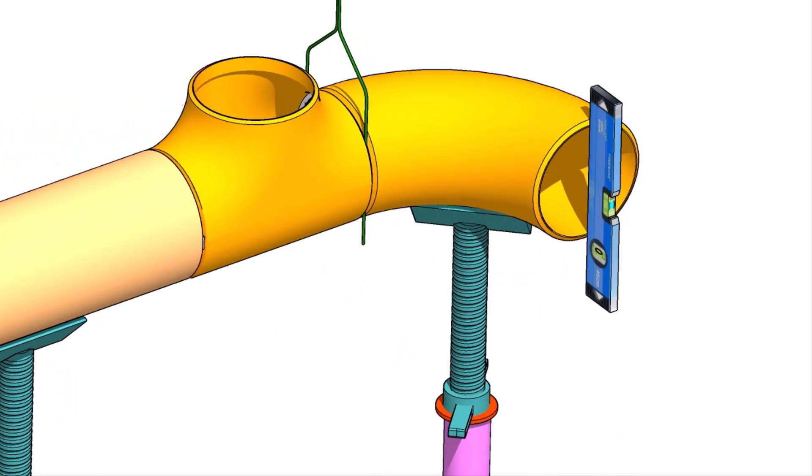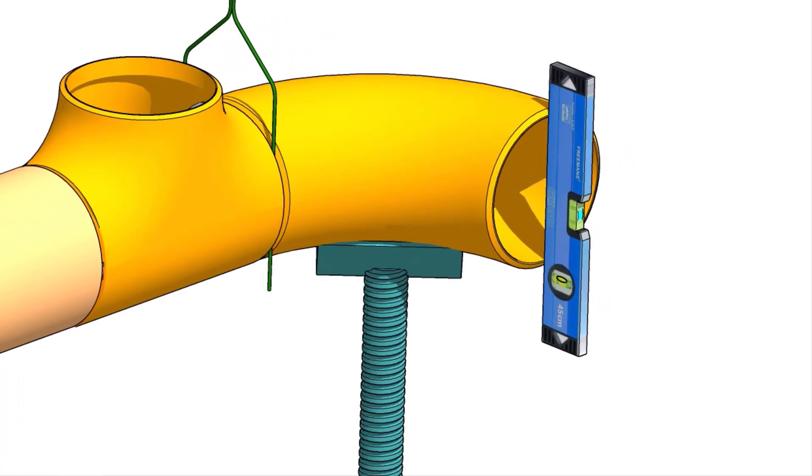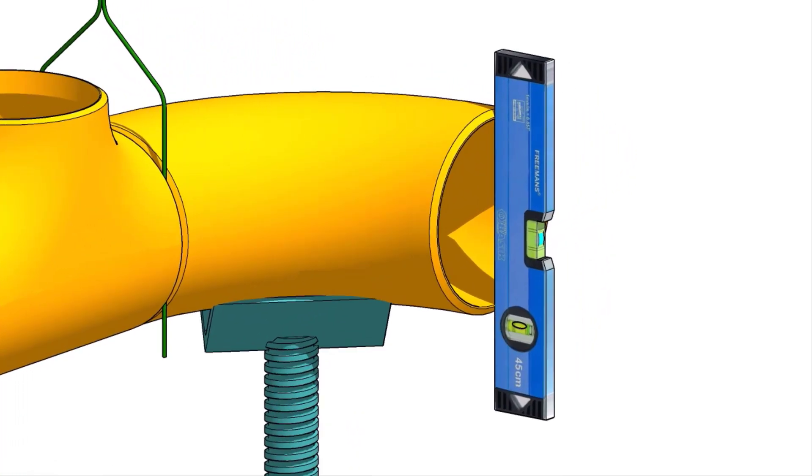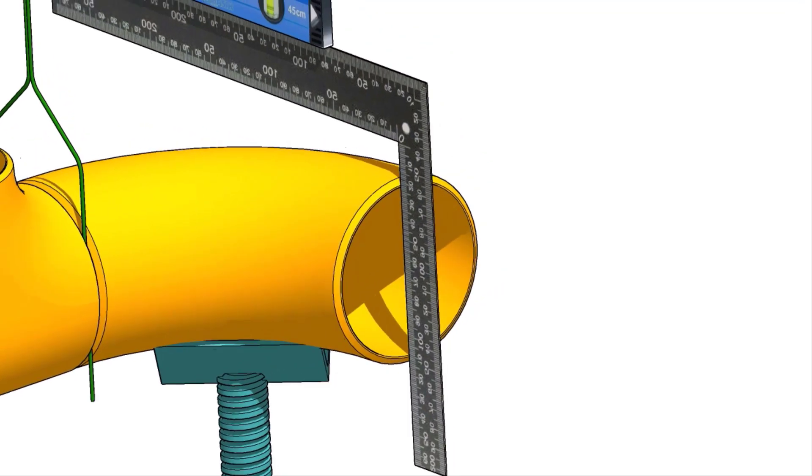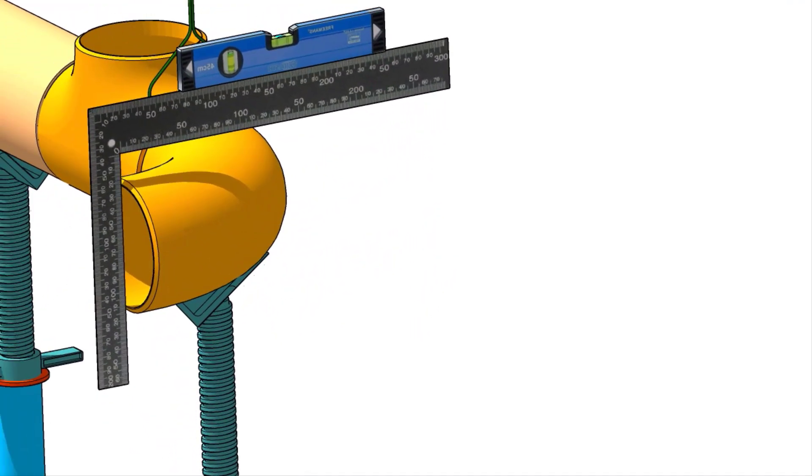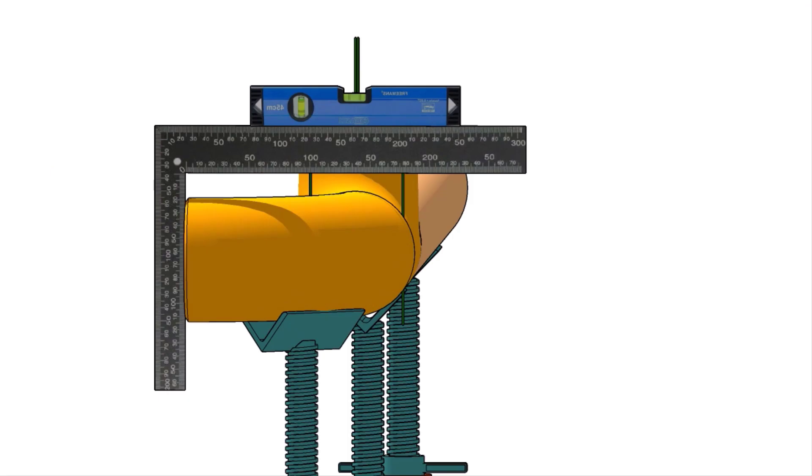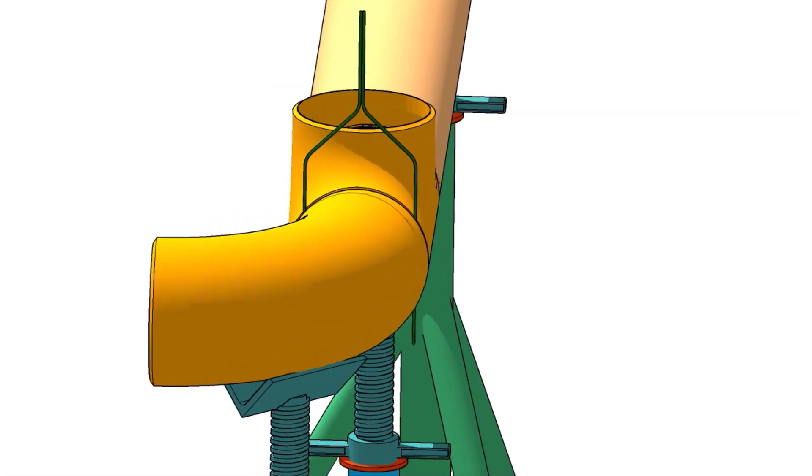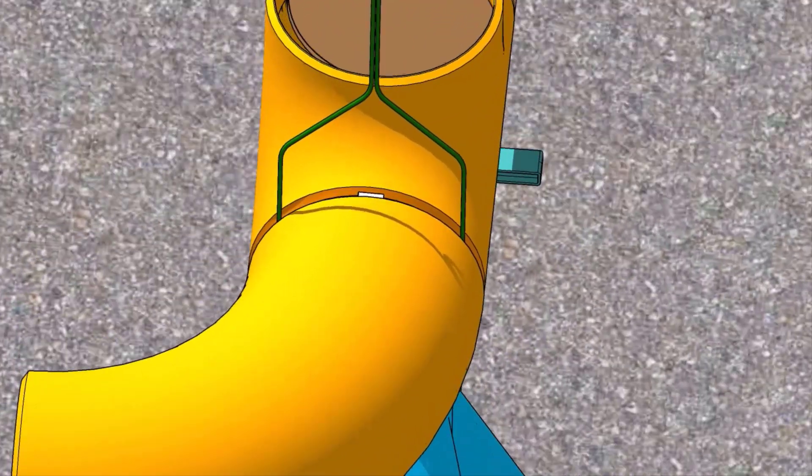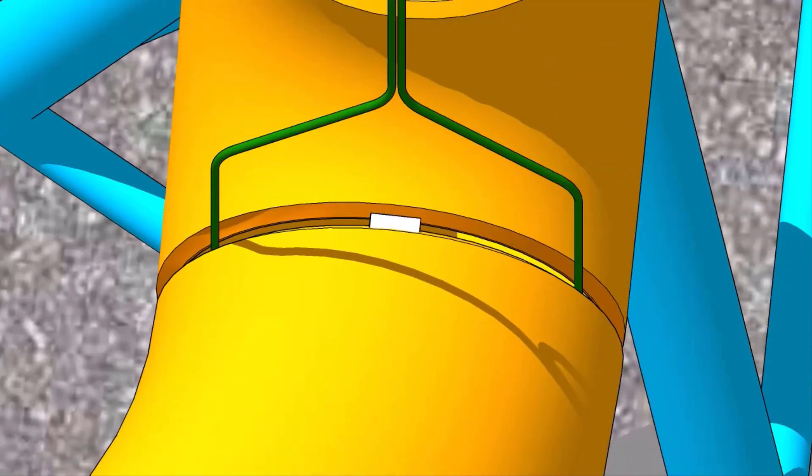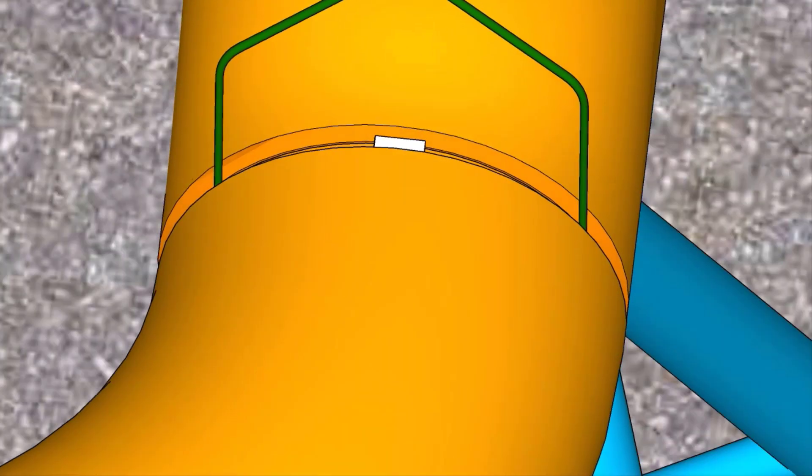You can maintain the level of the elbow face like this, or like this method. Tack weld on the top and the bottom side of the joint.